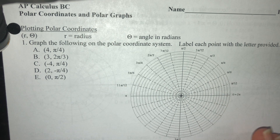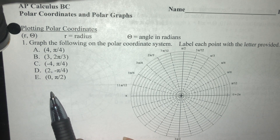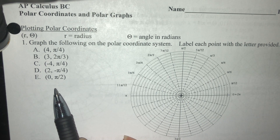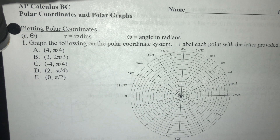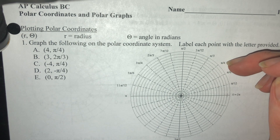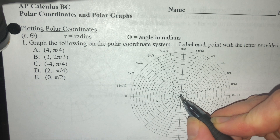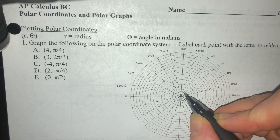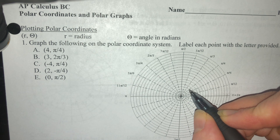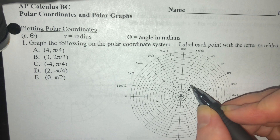Polar graph paper is available in Google Classroom if you want to use it, but you can also just sketch on paper. So we're going to plot four points. The first is point A at (4, pi/4). That means I go to the angle pi over 4 — midway in the first quadrant — and the radius is 4, so I count out 1, 2, 3, 4 circles from the center. There's point A.